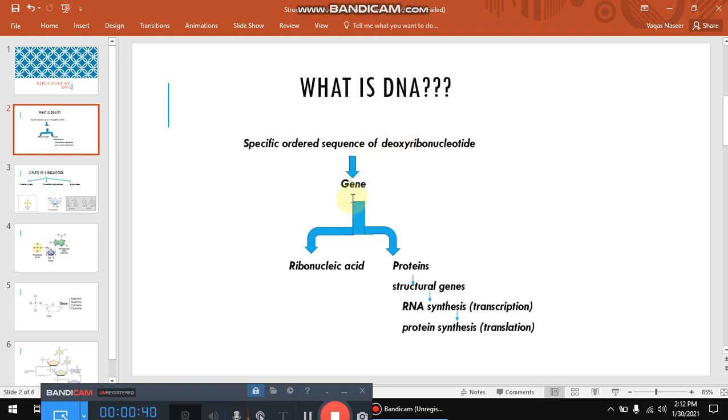Some genes encode for proteins, other genes encode for ribonucleic acids. Those genes which encode for proteins are called structural genes, and these structural genes are decoded by two successive processes. Number one is transcription, that is RNA synthesis. Another is translation, that is protein synthesis.